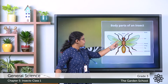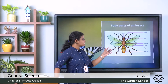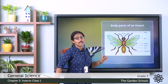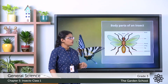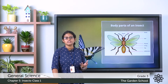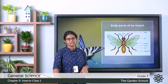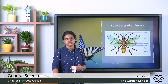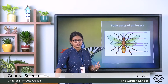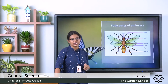The next part is the middle region, that is the thorax. This middle region bears the wings and legs. An insect has two pairs of wings that help them to fly. Most insects have two pairs of wings. How many legs do insects have? They have six legs. So the thorax, that is the middle region, bears the wings and legs.